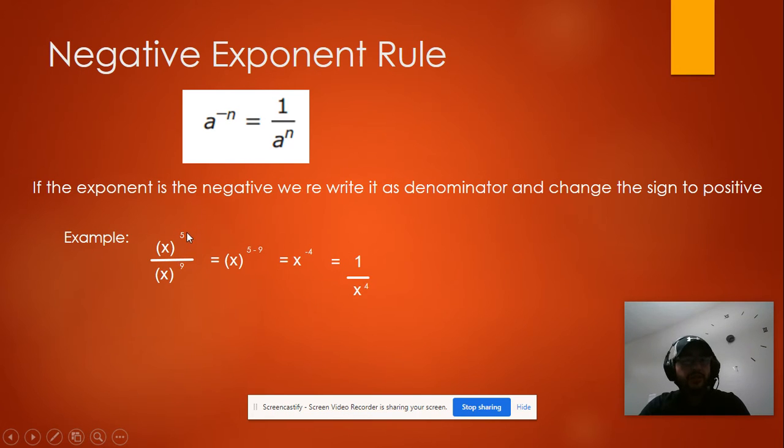We got x to the fifth power divided by x to the 9 power. So it will be x to the 5 minus 9 because we're subtracting. Quotient rule, we're subtracting. So my answer will be x to the negative 4.